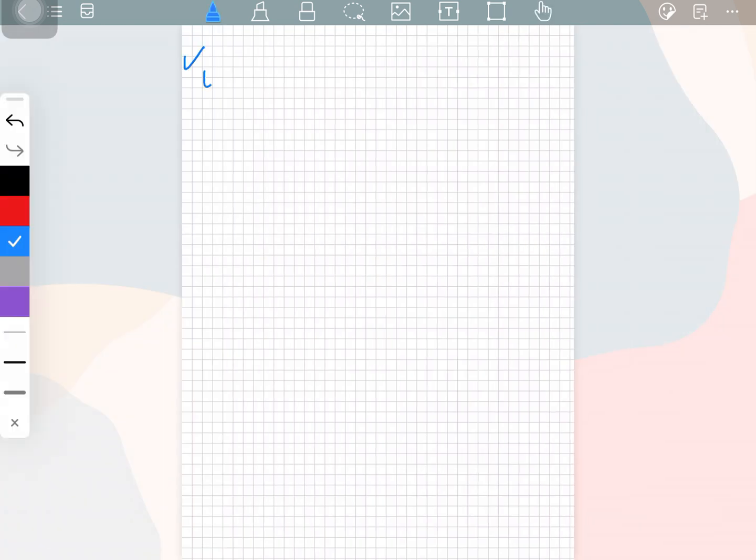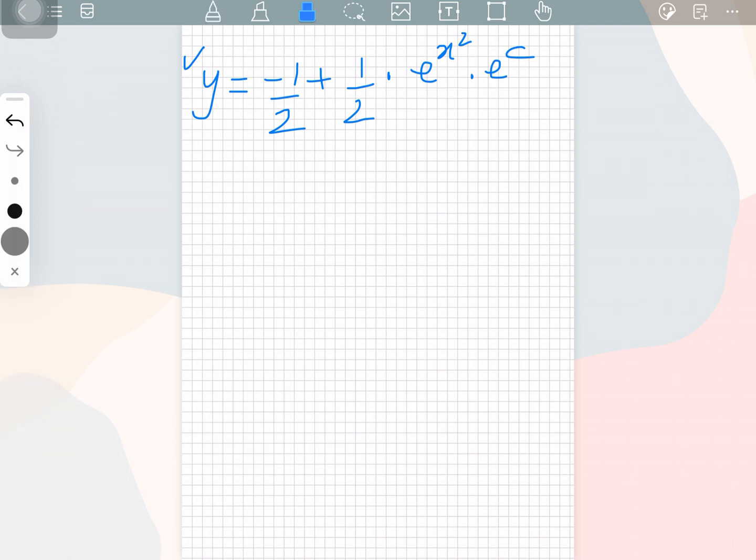We can write it as y is equal to minus 1 over 2 plus 1 over 2 times e to the power x square times e to the power c. We are just going to apply laws of indices over here. Then the power is going to get added. So we can express it in that form as well.